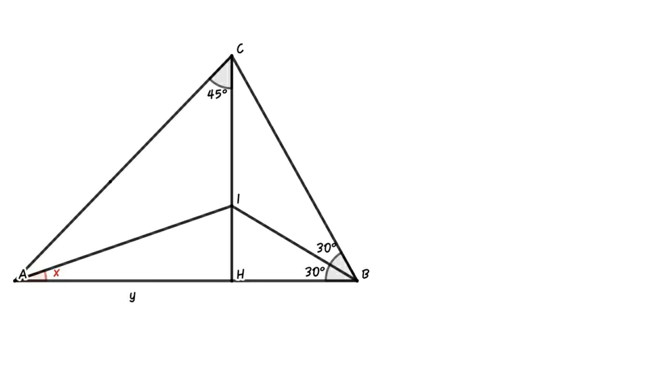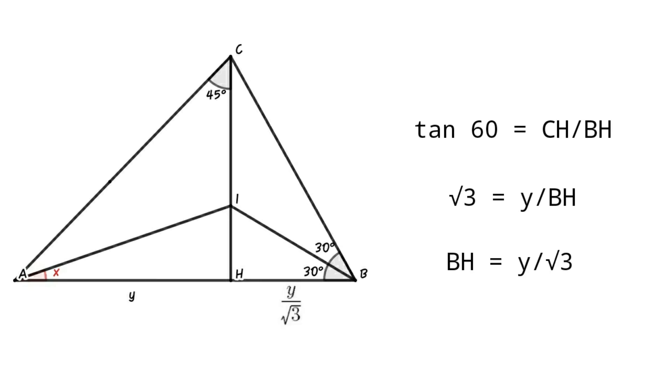Consider triangle BCH. Then tan 60 equals CH over BH. That is, root 3 equals y over BH, or BH equals y over root 3.